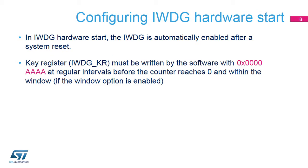The Independent Watchdog hardware is enabled by the device's option bytes. If the hardware mode is enabled, after every system reset, the watchdog automatically loads the downcounter with 0xFFF and starts to count down. To prevent any reset, the key register must be refreshed at regular intervals before the counter reaches zero and within the window if this option has been selected.